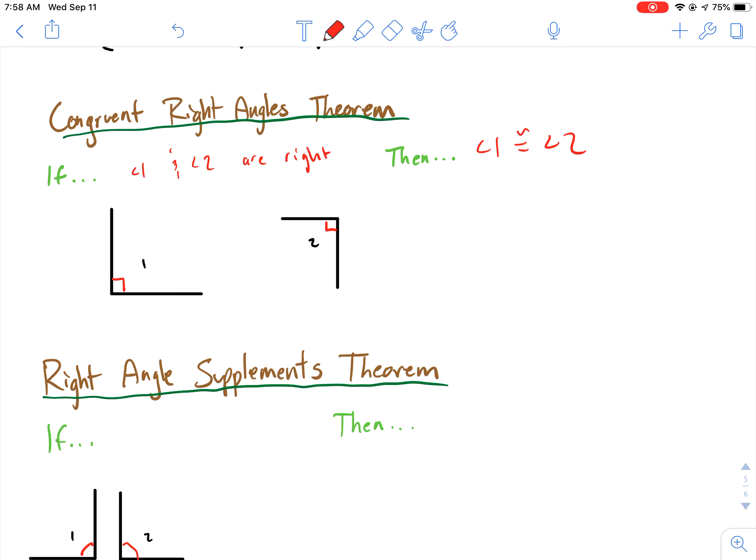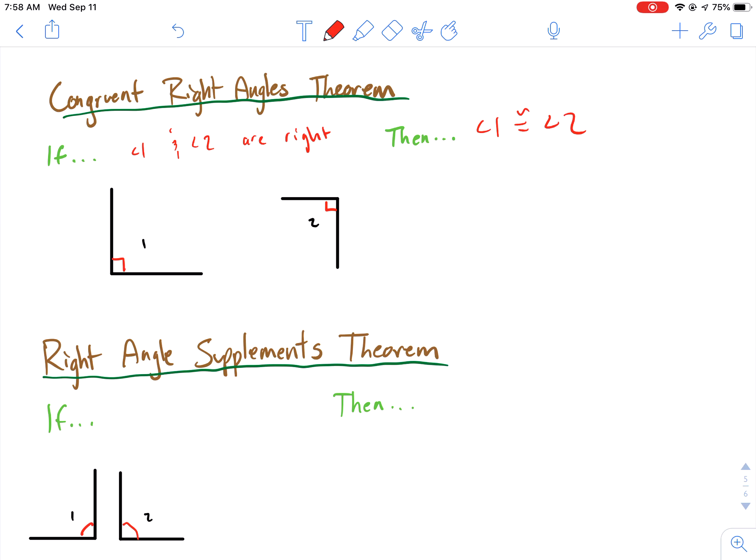If angle 1 is 90 degrees, angle 2 is 90 degrees, and they're both right angles, that means they're congruent to each other. So that's all that's saying there.